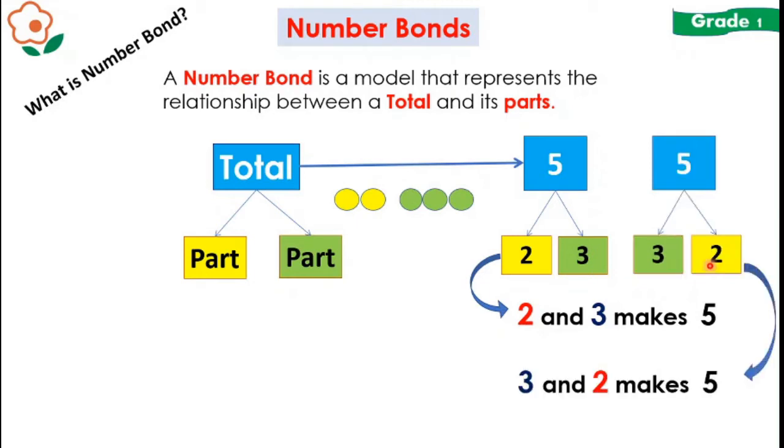Similarly, does 3 and 2 make 5? Yes. So then order doesn't matter very much in the number bond.